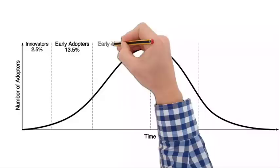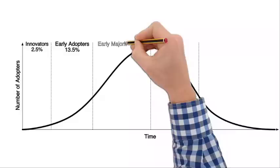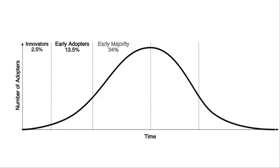The early majority are sometimes known as pragmatists, who want improvement, whilst the late majority are sometimes known as conservatives. What they want to focus on is security.